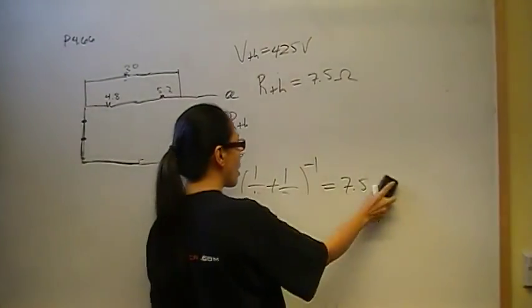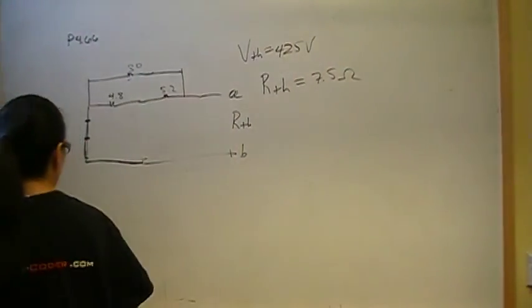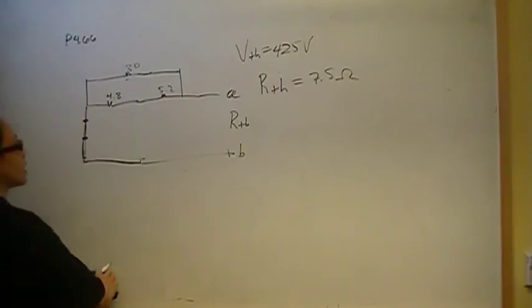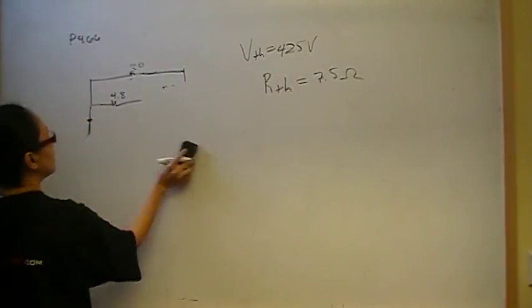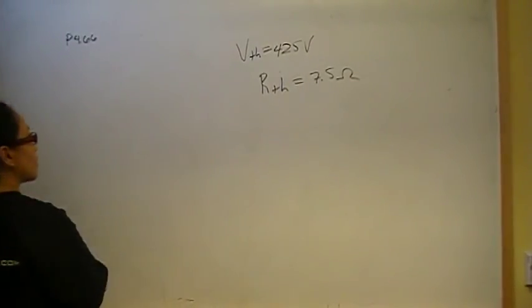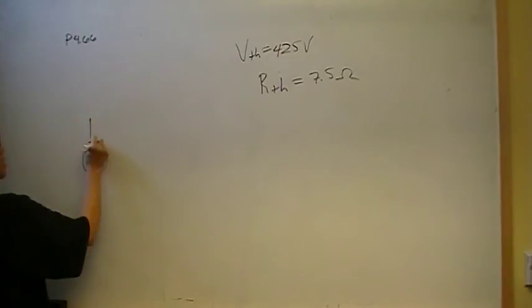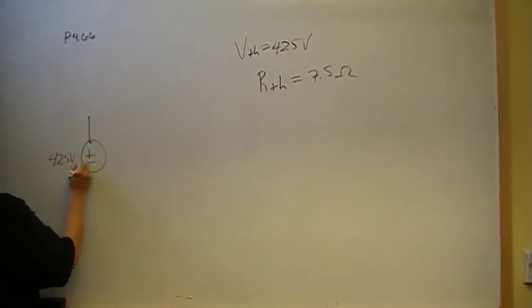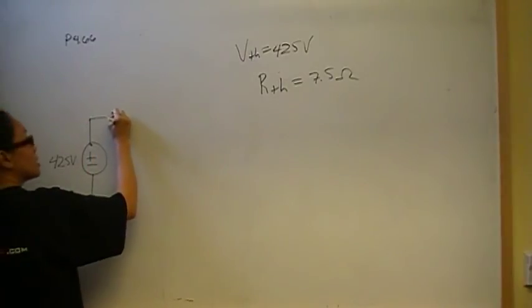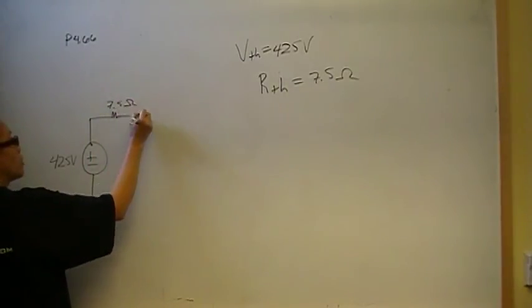Now we're going to draw our Thevenin equivalent circuit. And that will be our official answer. So our official answer then is the Thevenin equivalent circuit is 425 volts in series with 7.5 ohms.